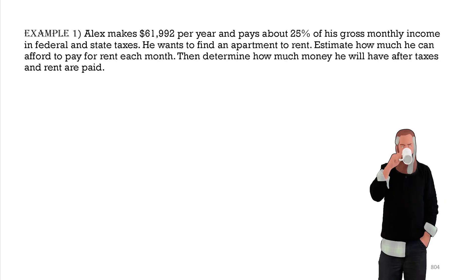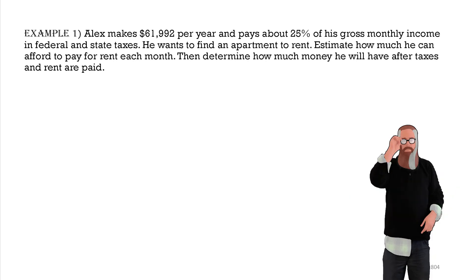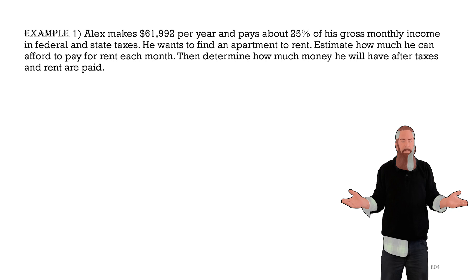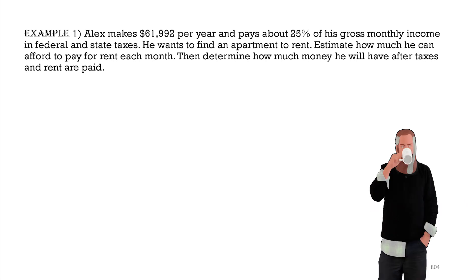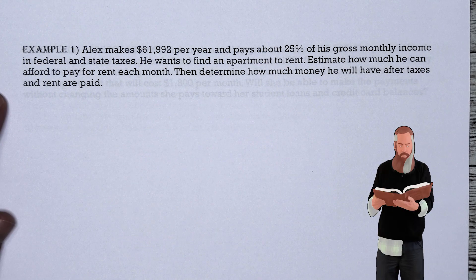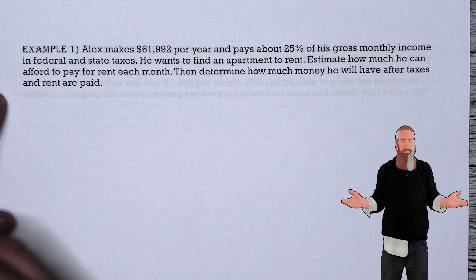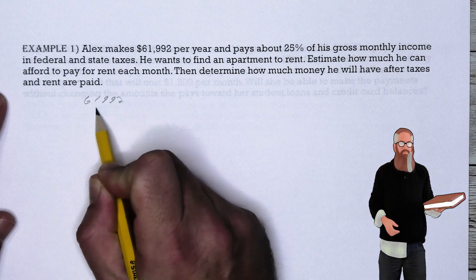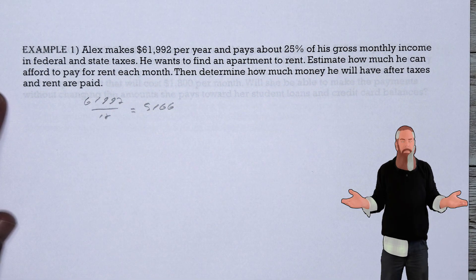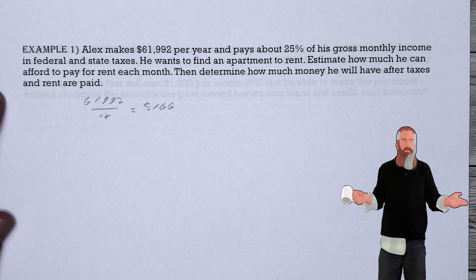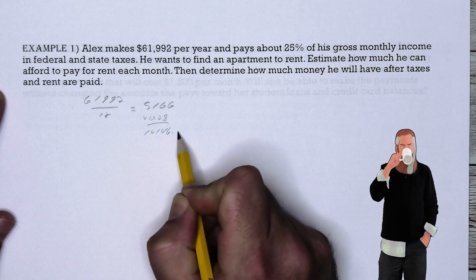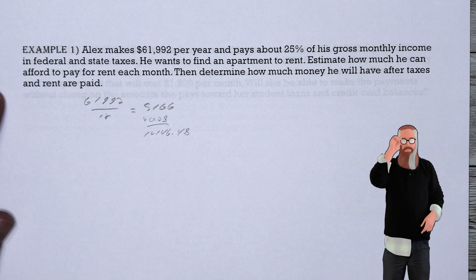Now let's calculate the affordability of monthly rent. Alex makes $61,992 per year and pays about 25% of his gross monthly income in federal and state taxes. He wants to find an apartment. Using 28% as a good estimate for the rent recommendation, we divide $61,992 by 12 to get a gross monthly income of $5,166. Multiplying by 0.28, Alex can afford approximately $1,446.48 per month in rent.